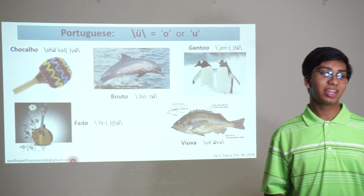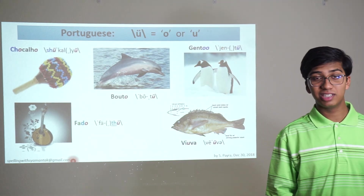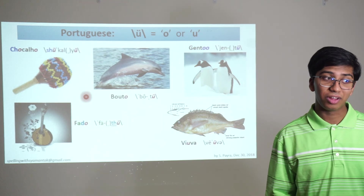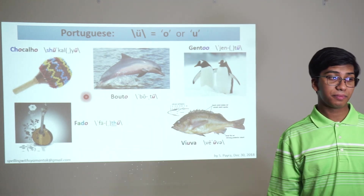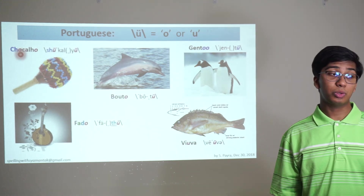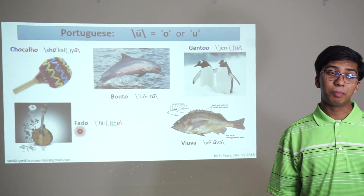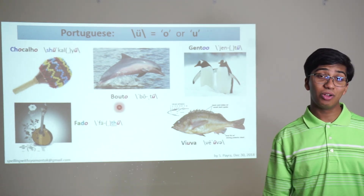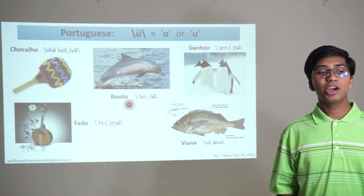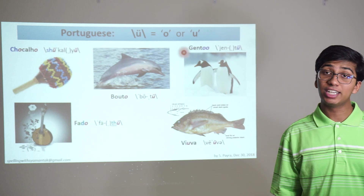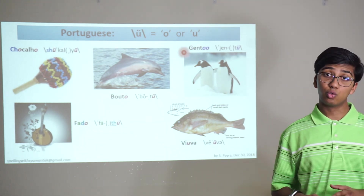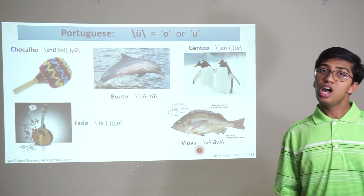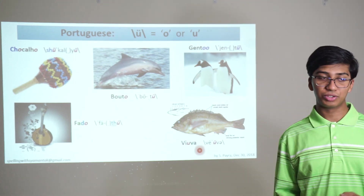If you've been astute, you may have noticed that in many of these Portuguese words — like feijoada — the U sound is actually spelled with an O. Xucuru has two of them. Fado — a plaintive Portuguese folk song. Boto — the pink Amazon River dolphin — it's a really cool animal. Occasionally you have outliers like gentoo — this is the only place where the U sound is spelled OO — remember that; it's a kind of penguin. And viúva — also distinctive in having a U — it's not what usually happens.